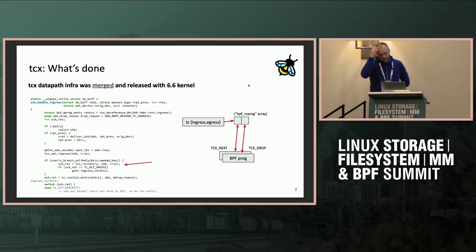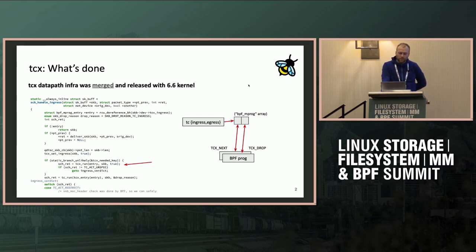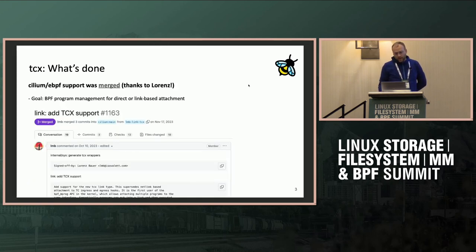First on TCX: it was merged in the 6.6 kernel. Just a quick recap for those who don't know what it is — it's basically a more efficient, modernized TC BPF data path. What we get with this aside from performance is BPF link support and a unified attach interface for links, so that we can have multiple programs on the TC ingress and egress hooks. Cilium eBPF library support was added by Lorentz so that we can use it from Go for Cilium integration.